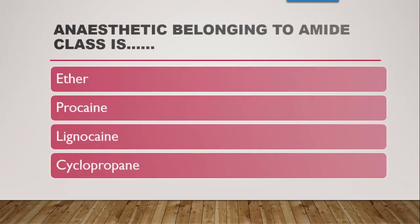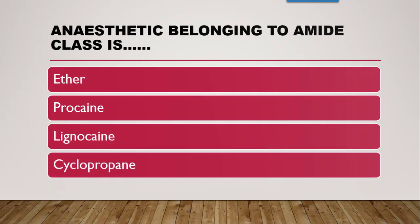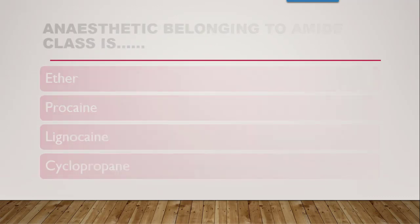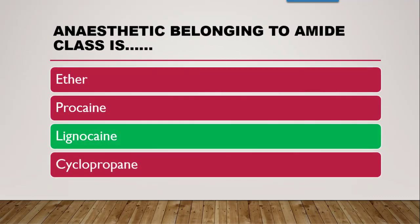Next question: the anaesthetic belonging to the amide class is? Options are ether, procaine, lignocaine, and cyclopropane. The local anaesthetic which belongs to the amide class is lignocaine.